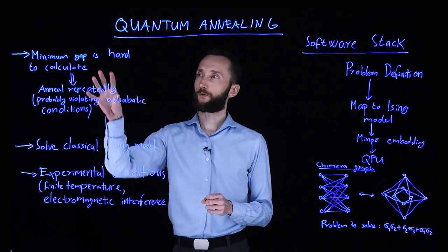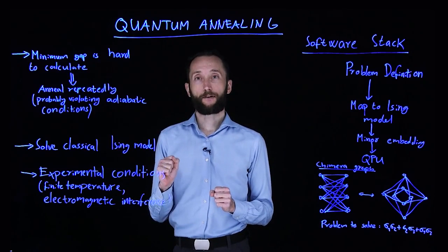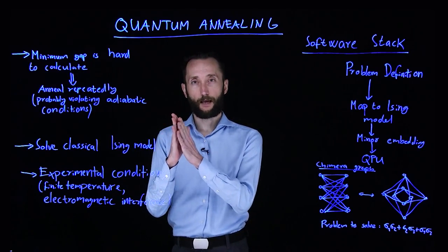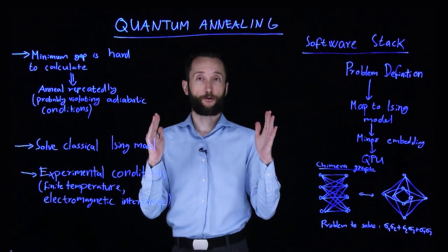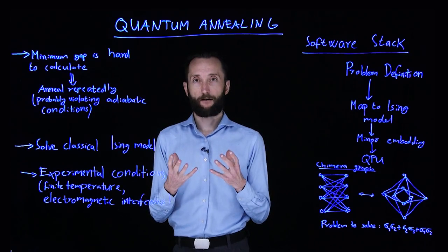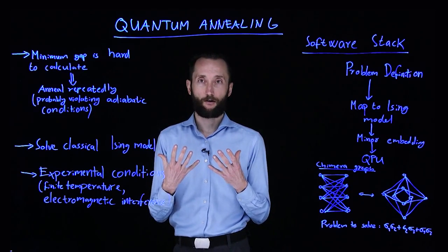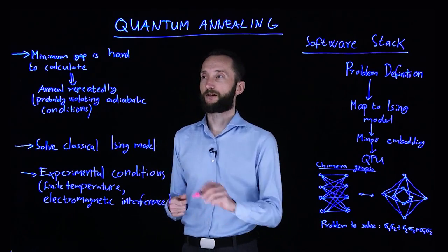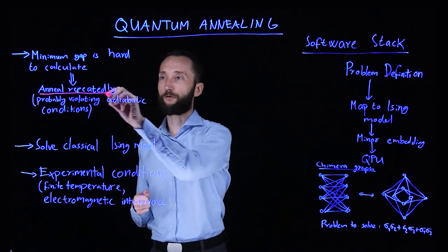the annealing, you have to respect the gap and the minimum gap that you experience on all the Hamiltonians that you transition through. This is very hard to calculate. So the speed limit is intrinsically hard to get. So instead what you can do is just anneal over and over again.